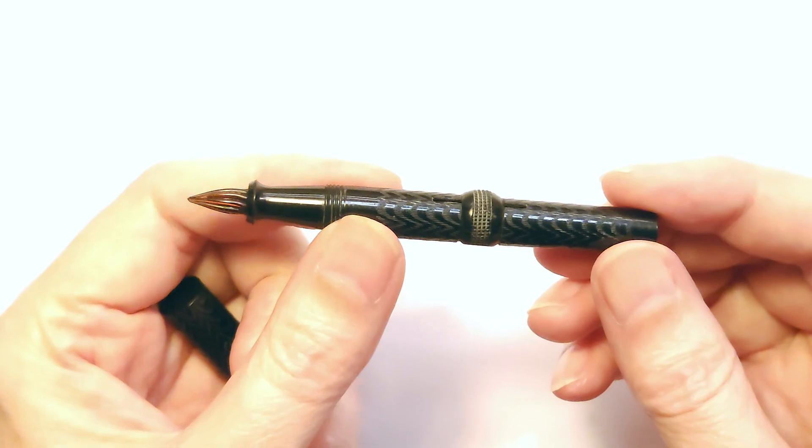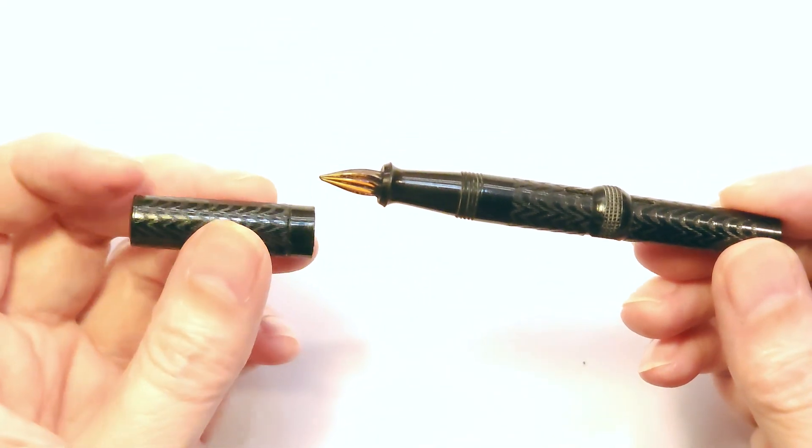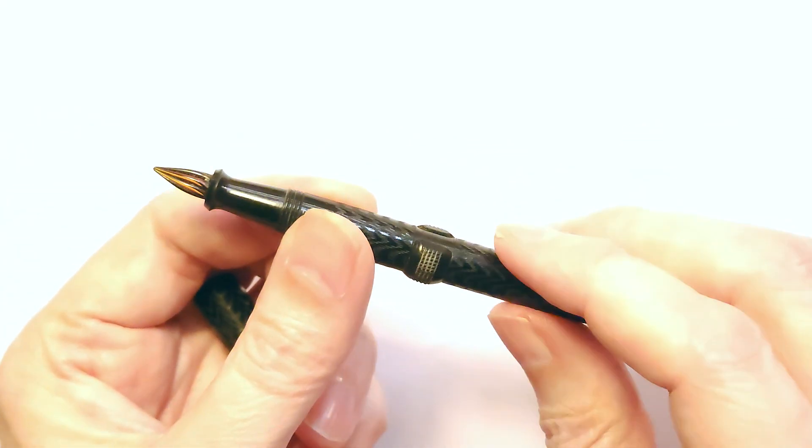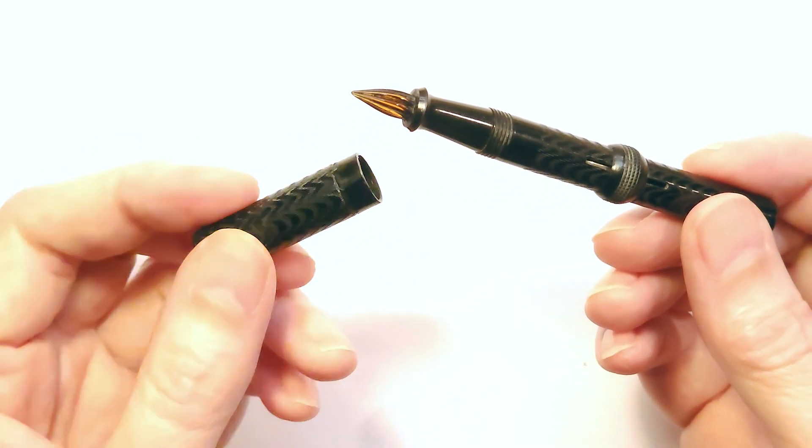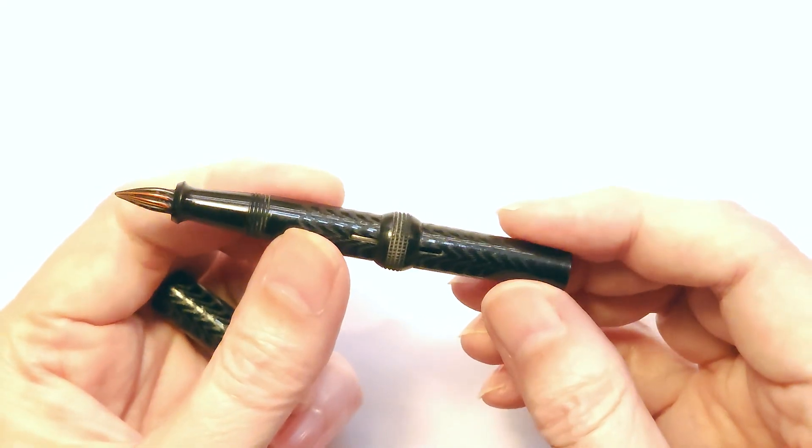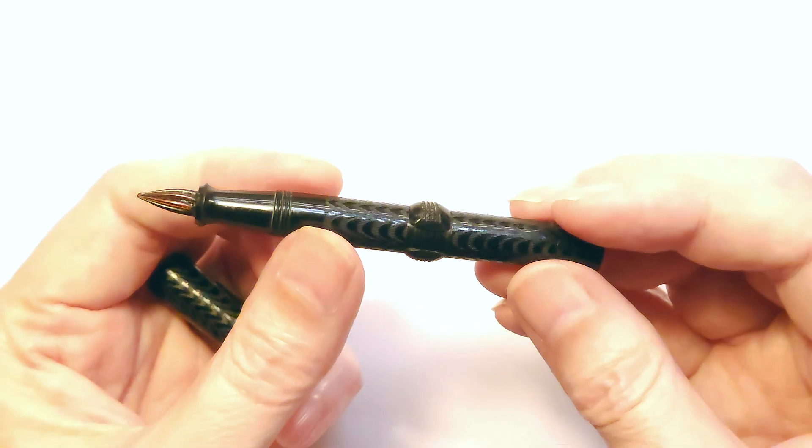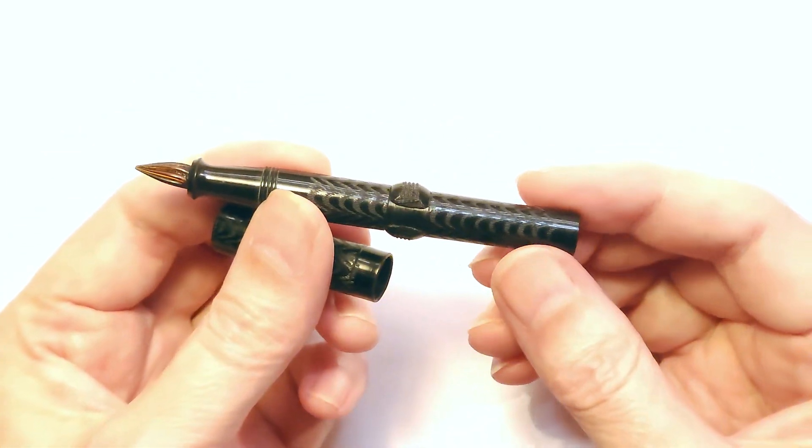This one, the barrel and the cap, are made of molded nitrocellulose, which was very popular in the early part of the 20th century for making lightweight, inexpensive parts. But nitrocellulose is very prone to coming apart and cracking, and it doesn't really resist wear very well. So a lot of these pens don't survive.